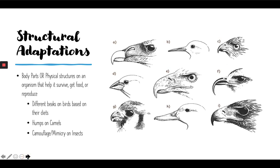So first we have structural adaptations. These are body parts or physical structures on an organism that help it survive, get food, or reproduce.